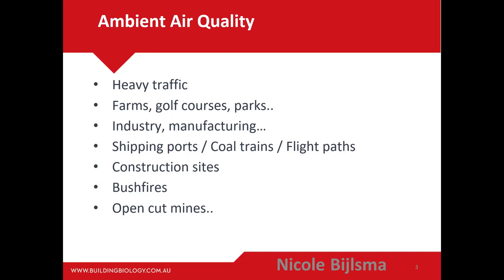Farms and golf courses are especially problematic. A naturopath colleague living a block from a golf course had pesticide exposure — the exposure zone is two kilometers. If you live within two kilometers of a farm with crop dusting or a heavily sprayed golf course, you're at risk. Spraying often happens in the middle of the night, so you won't even see it. It's not a coincidence that golf superintendents have double the incidence of non-Hodgkin's lymphoma due to pesticide exposure. My colleague had her blood tested and the results were off the chart — she and her kids moved immediately.